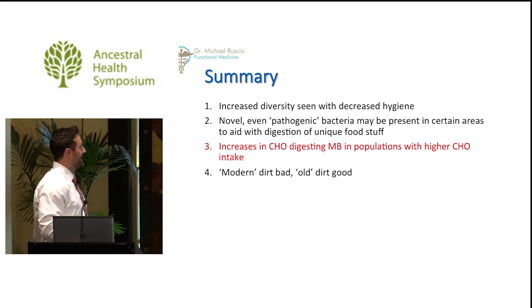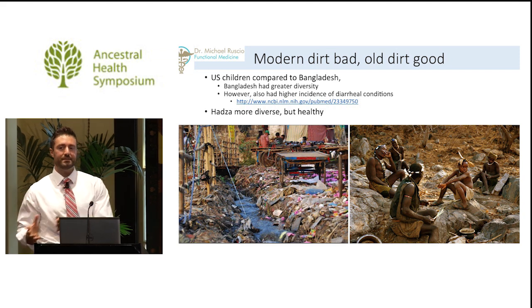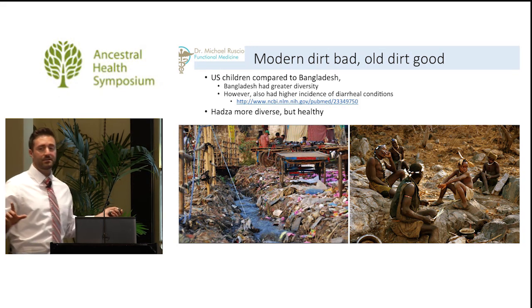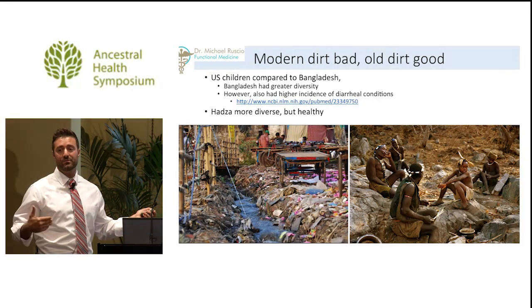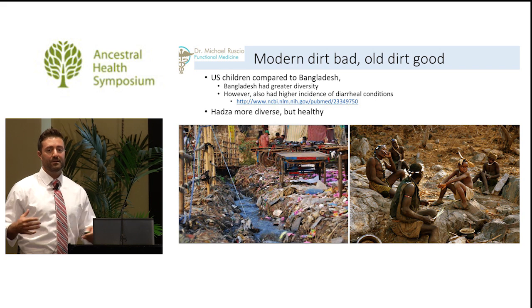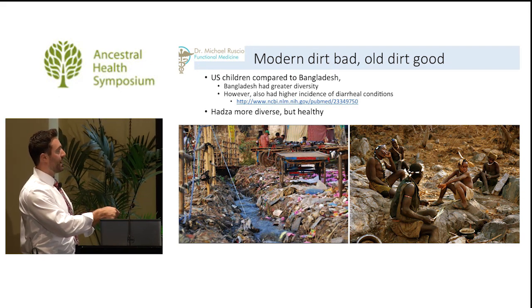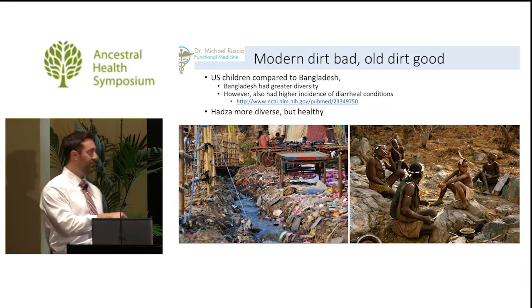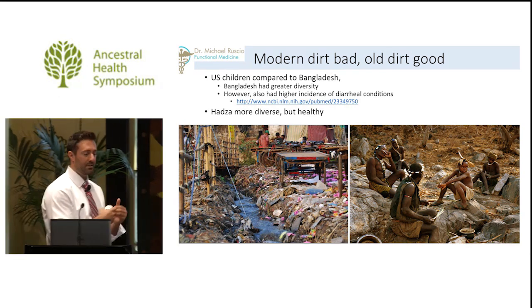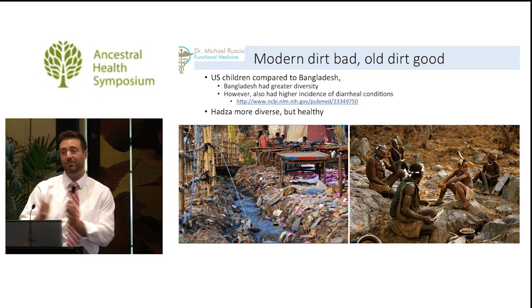Modern dirt bad, old dirt good. Coming back to the comparison of US to Bangladesh: children in Bangladesh who grew up in slum-like conditions had much more diversity, but also a high incidence of diarrheal diseases. But the Hadza, who also had high diversity and grew up in a hunter-gatherer society, had the high diversity without the diarrheal diseases. This may mean old dirt is good, modern dirt is bad. We evolved in an old-dirt scenario, not a modern dirty scenario. It's a key differentiation, because sometimes people hear that dirt is good for you and throw hygiene out the window—it may not be that simple. The type of hygiene may be what's important.